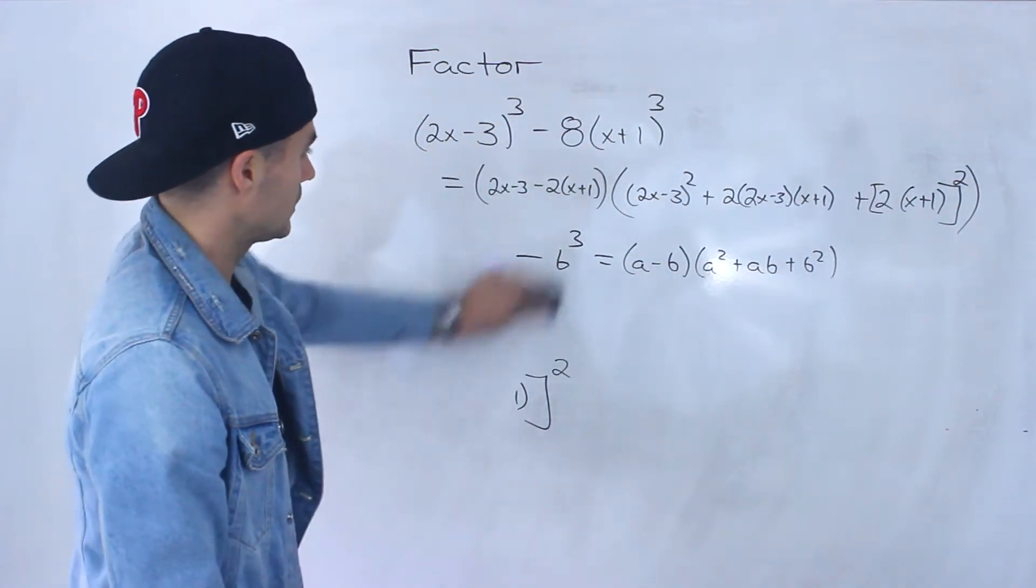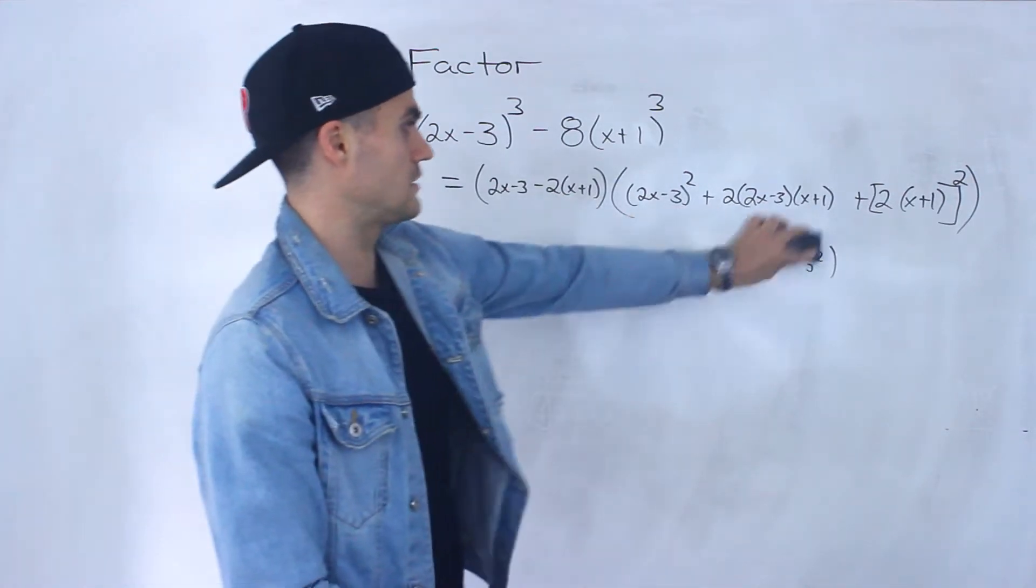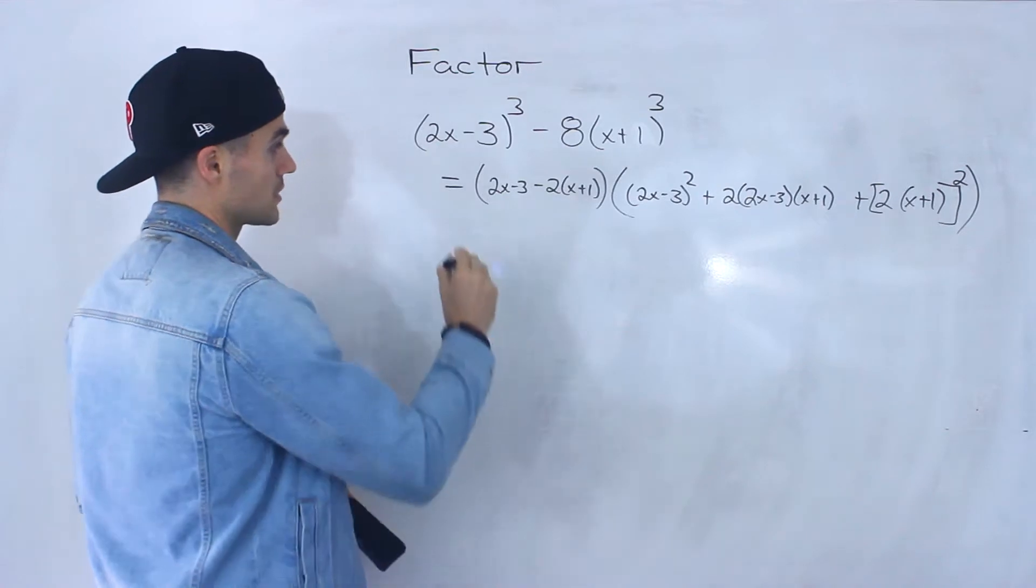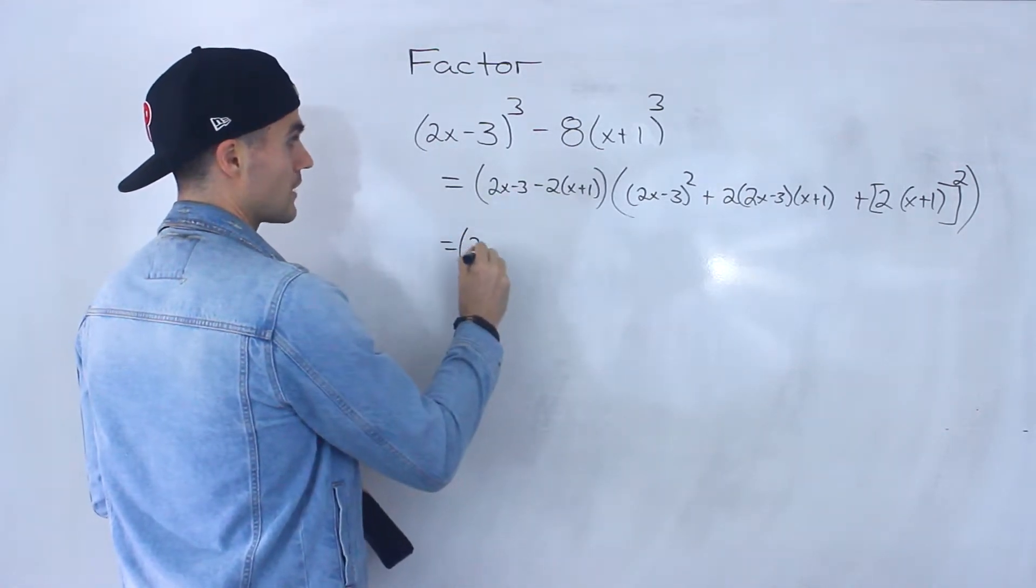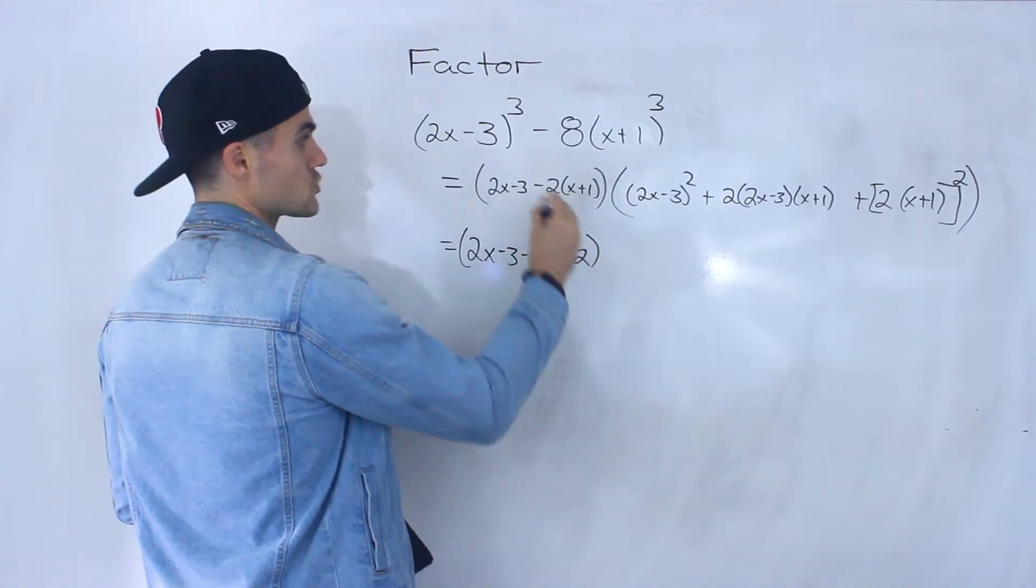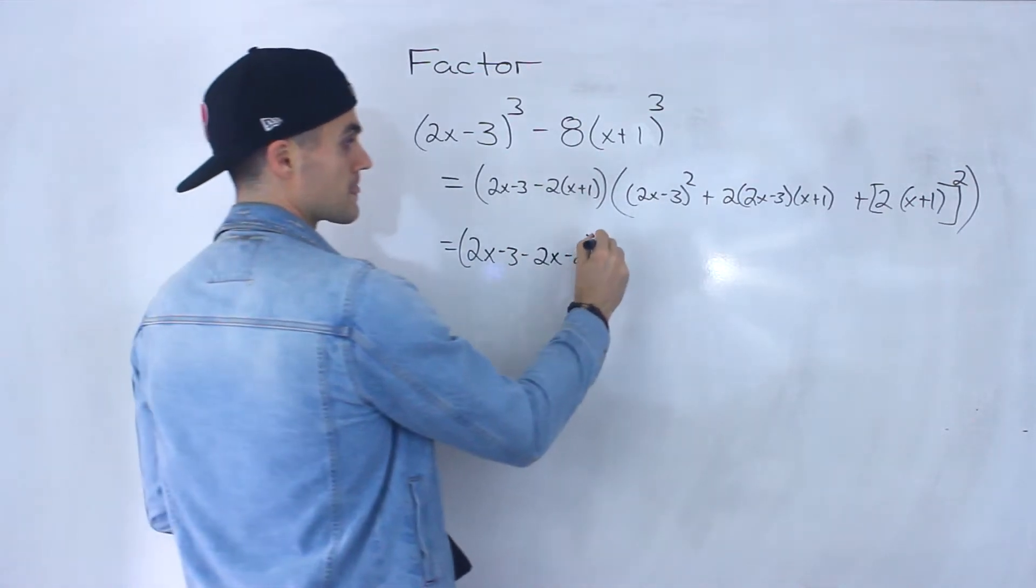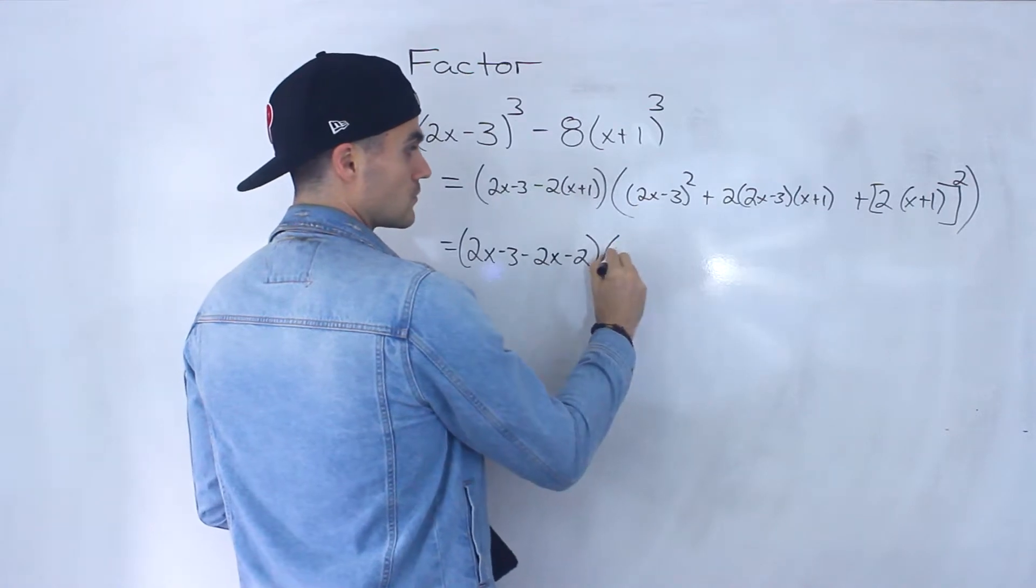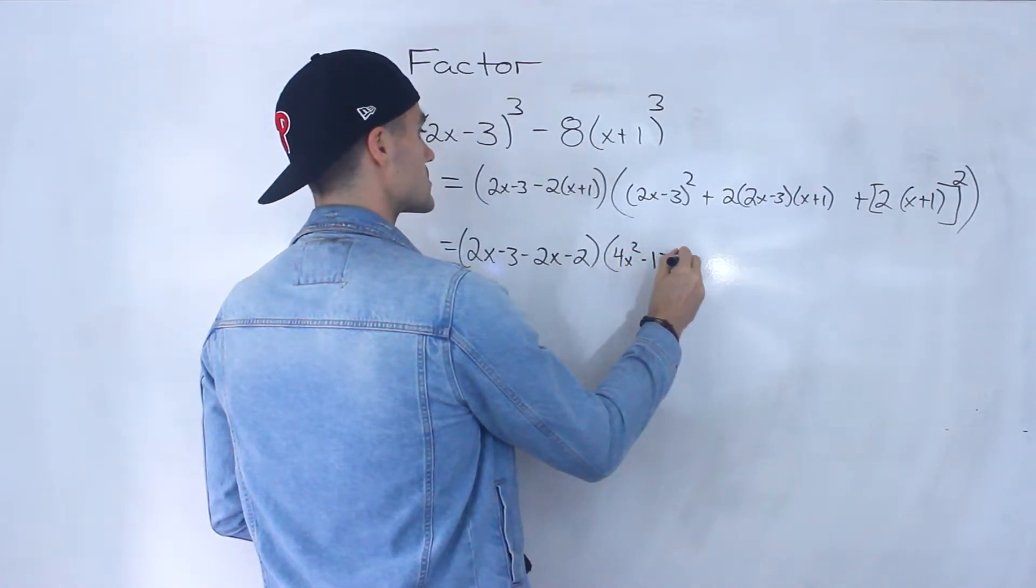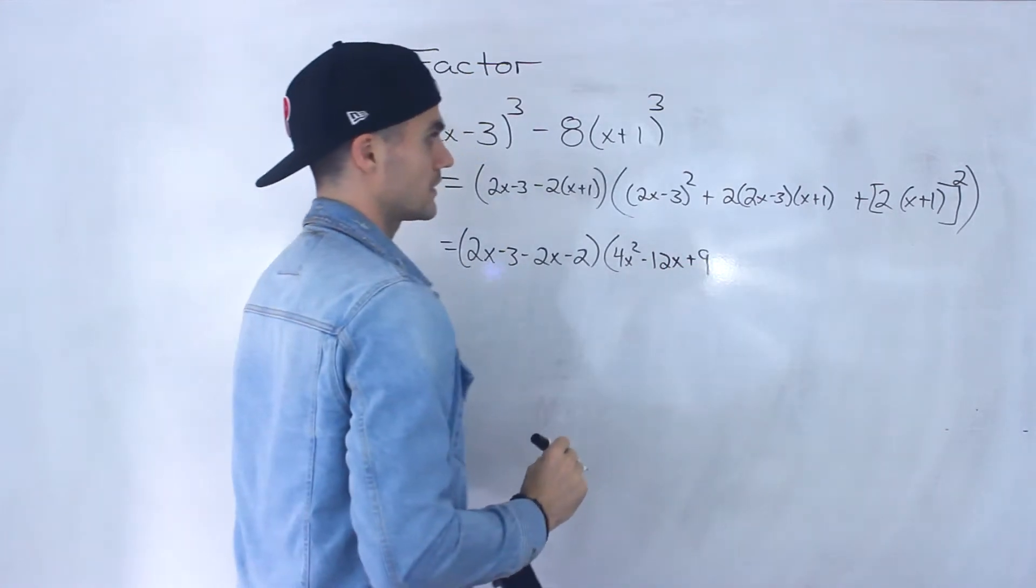And now really what it is, is just simplifying. You've got to be careful at this step too, because there could be a lot of algebra mistakes here. So over here, if we simplify, we'd have 2x-3-2x-2 after we distribute that negative 2 inside the bracket. This you foil it out, you'd end up with 4x²-12x+9, like that.